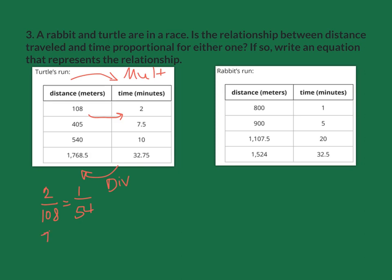Next one, 7.5 divided by 405. Because 2 times 54 gives me 108, I'm curious about 7.5. If I multiply that times 54, does it give me 405? It sure does.